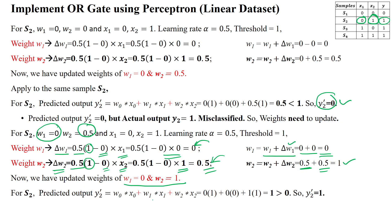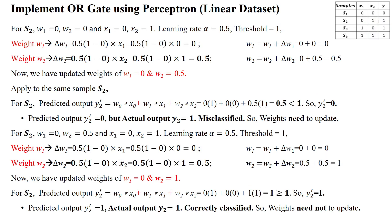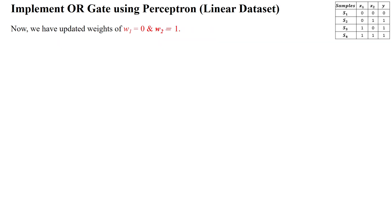Apply the newly updated weights w1=0, w2=1 to sample 2: w0·x0 + w1·x1 + w2·x2 = 0 + 0·0 + 1·1 = 1. Since 1 is greater than or equal to 1, the predicted output is 1. Comparing with the actual output — predicted output is 1, actual output is 1 — both match, so sample 2 is correctly classified. Weights need not be updated.